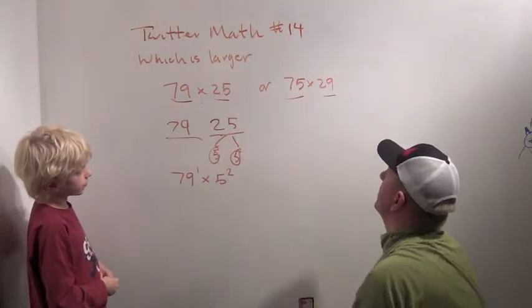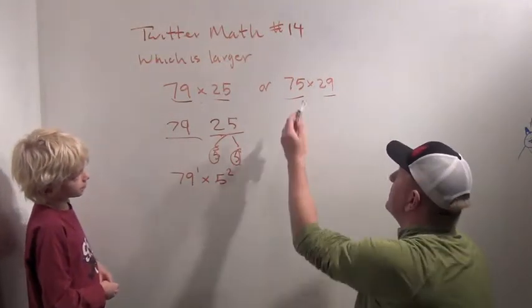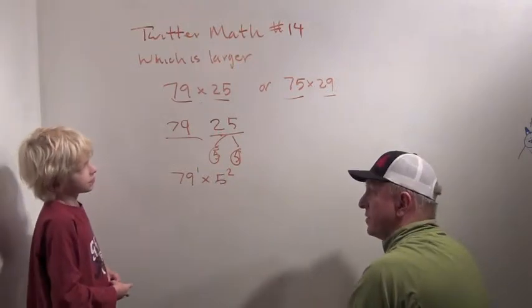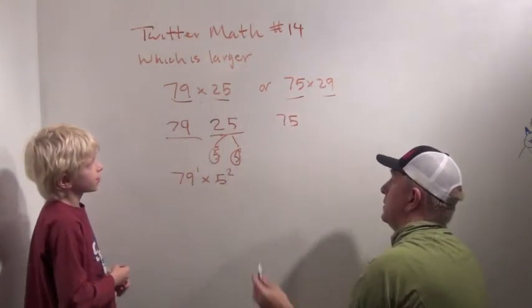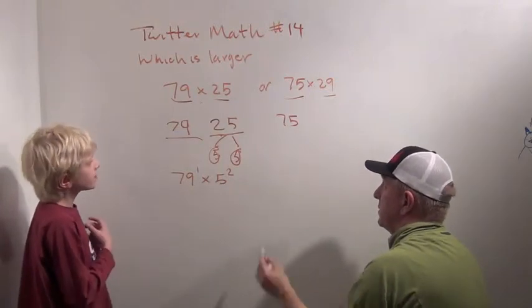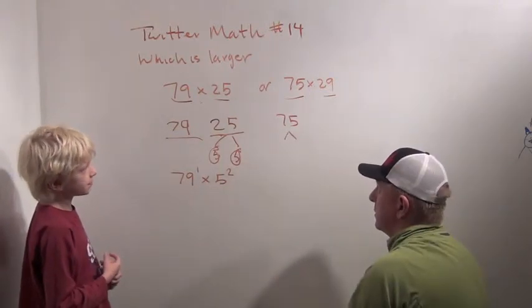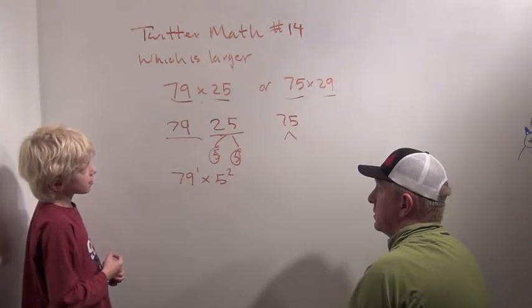Awesome. Now let's factor this into primes. What's this? What is 75? It's 5 times... 5 times something.